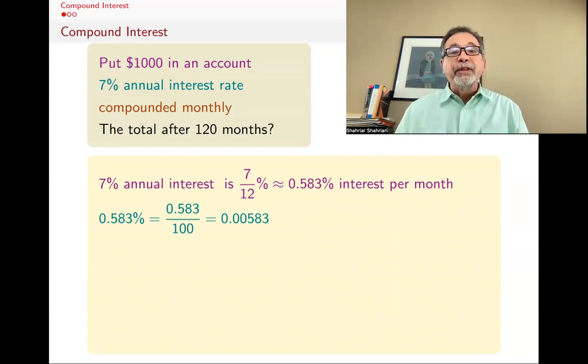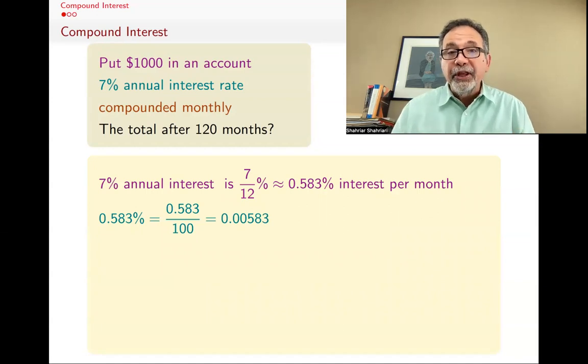But percent is not what we want. What we want is a fraction. And so we divide 0.583 divided by 100, and we get 0.00583. That's the interest you get per month based on how much money you have.